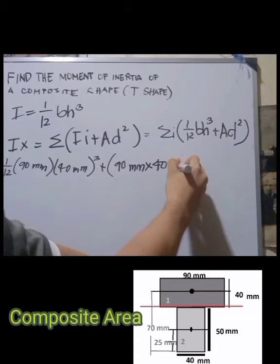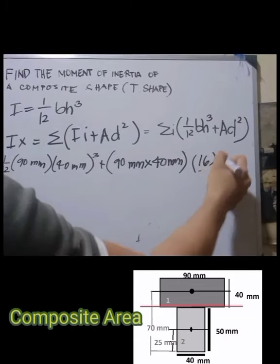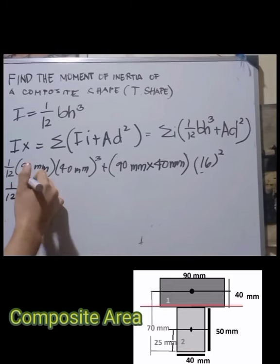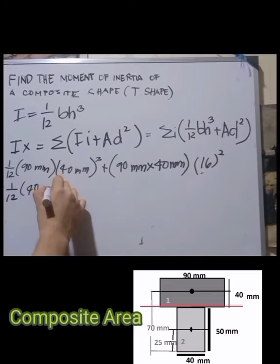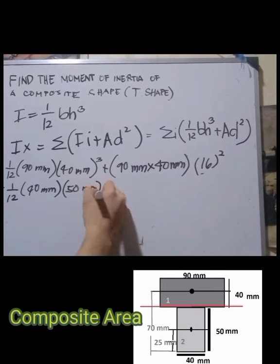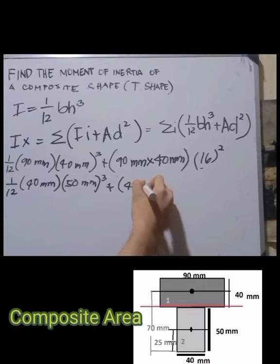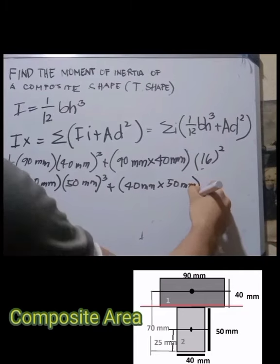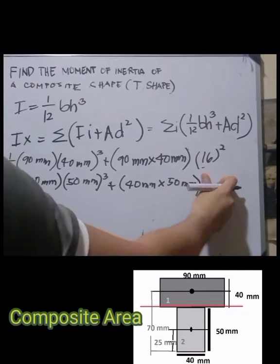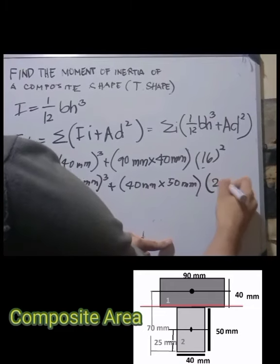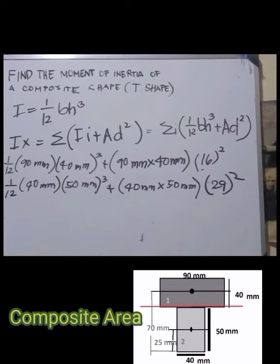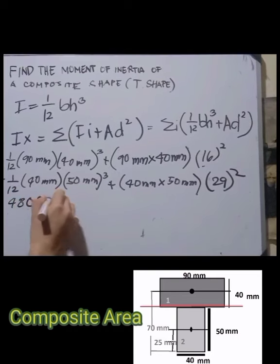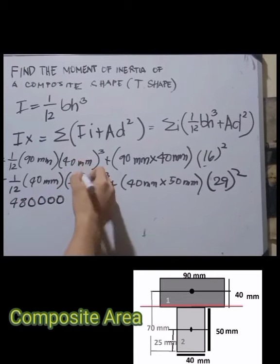The distance 16 mm comes from subtracting 70 mm minus 54 mm. For the second rectangle: (1/12) × 40 mm × 50 mm³ + 40 mm × 50 mm × (54 − 25)² mm.